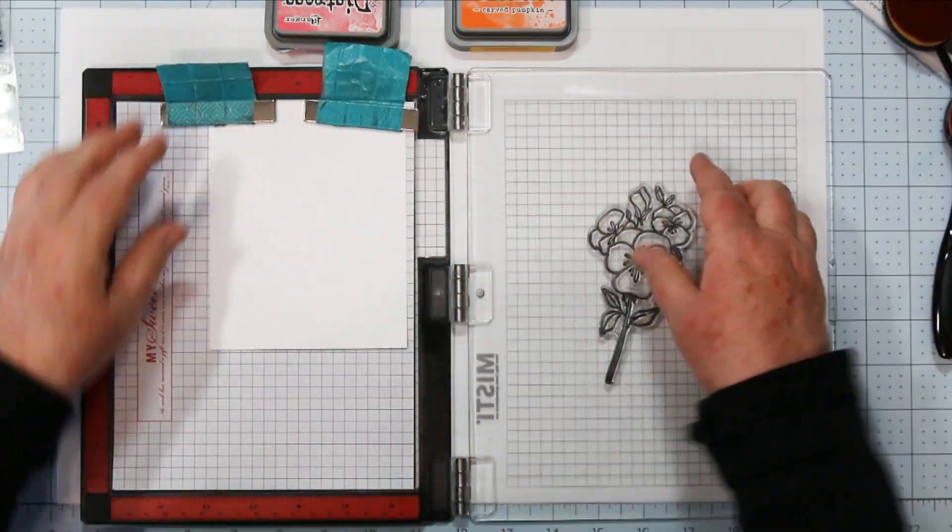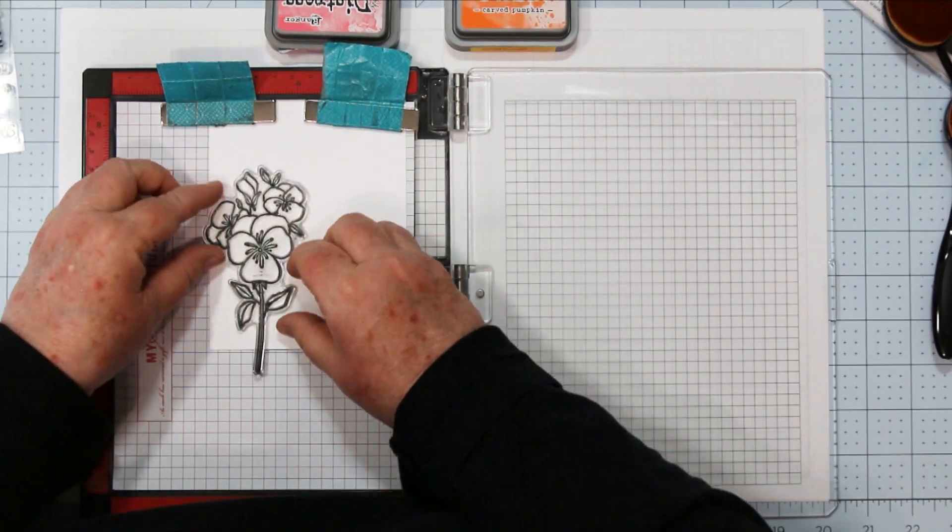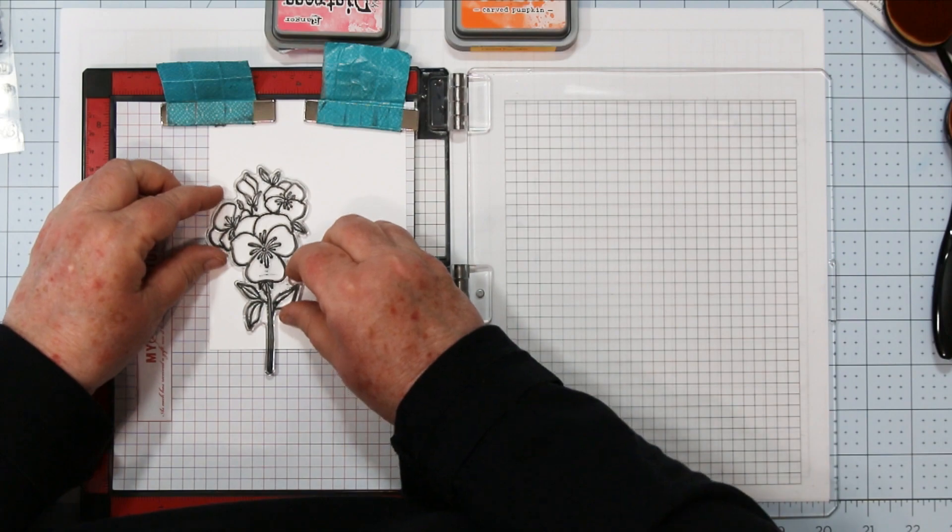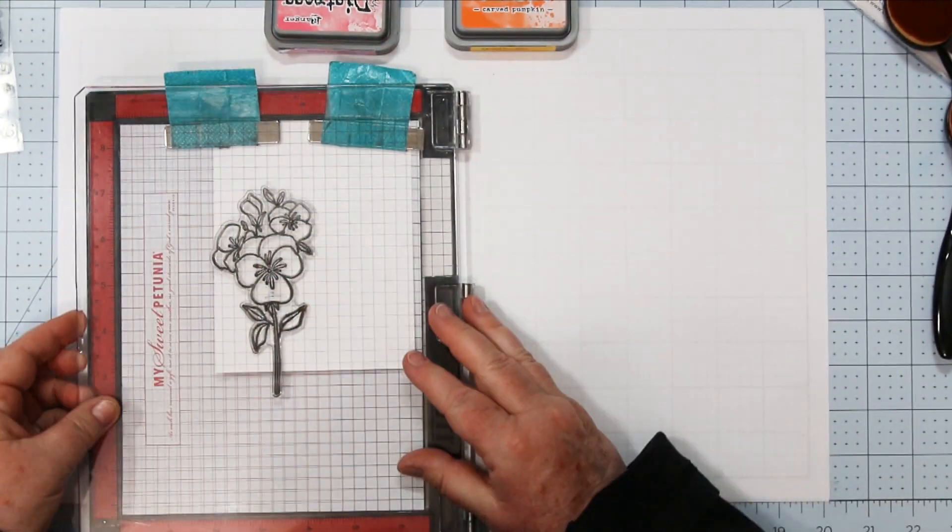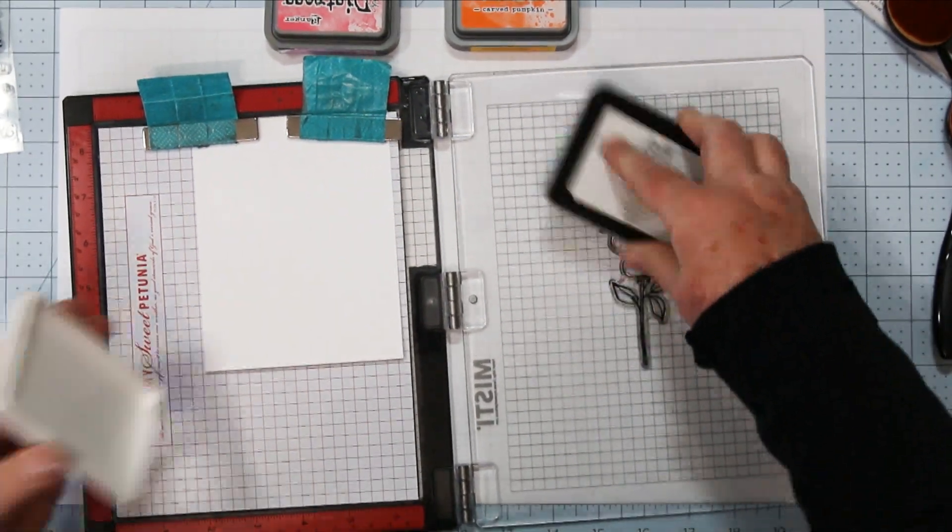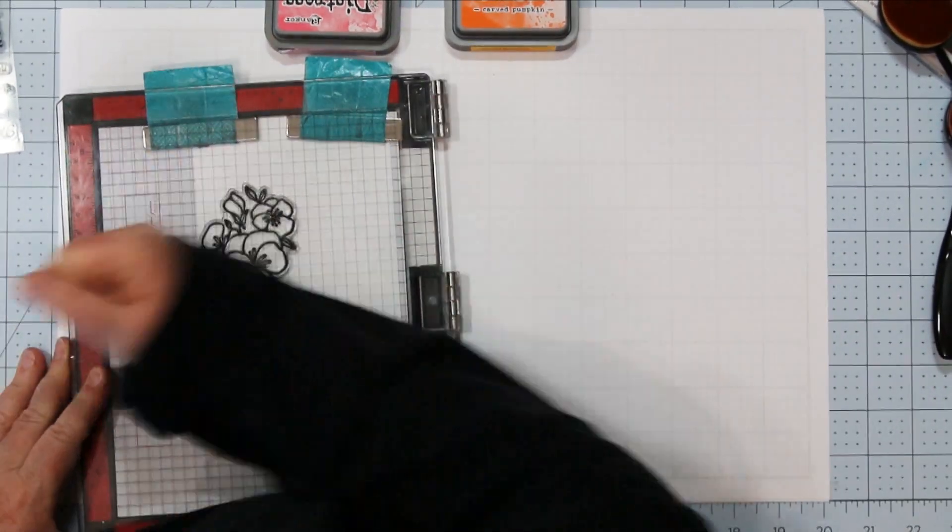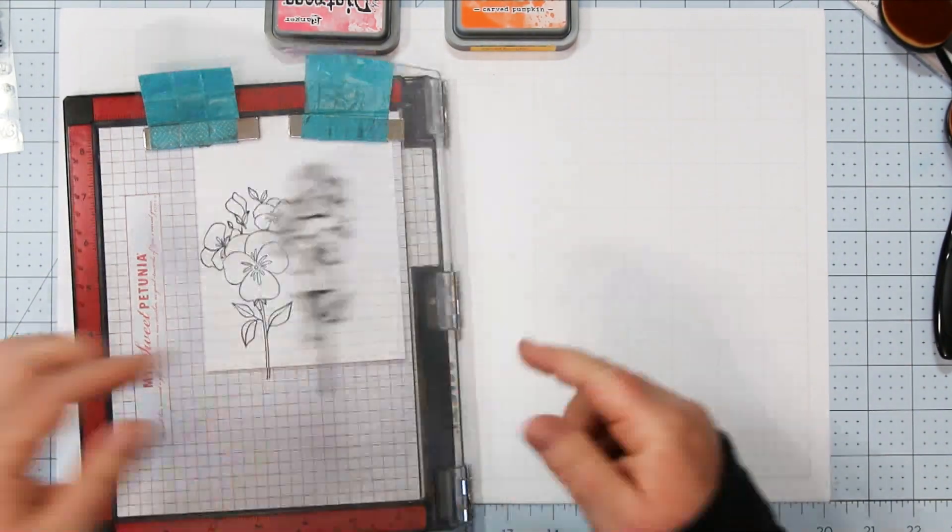I'm getting out my Misti and I'm putting my card front into the Misti. This is a four and a quarter by five and a half piece of Hammermill white card. I'm going to be stamping my image twice, so I'm starting in the middle so that I don't have to move my inky stamp. I can just move the paper.